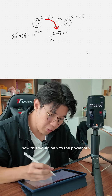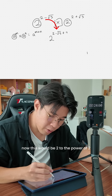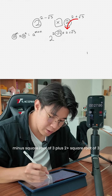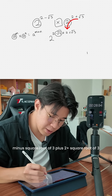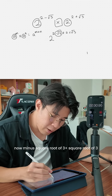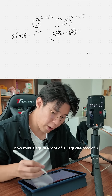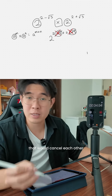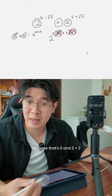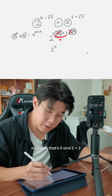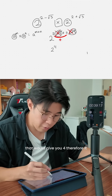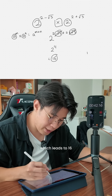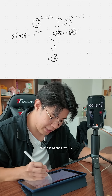This gives us 2 to the power of (2 minus √3) plus (2 plus √3). Now minus √3 plus √3 cancel each other out because that's 0, and 2 plus 2 gives you 4. Therefore it becomes 2 to the power of 4, which equals 16.